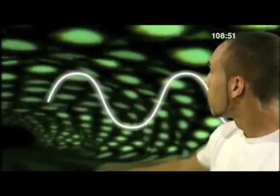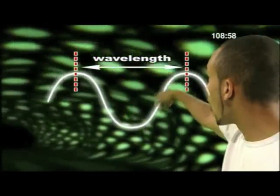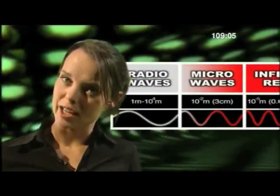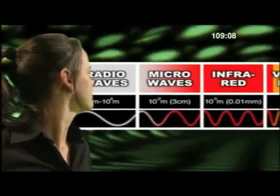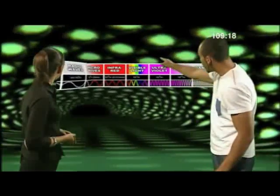But why are the waves arranged in that order? The waves are arranged according to the size of their wavelength and frequency. If we take a wave, the distance from one peak to the next peak is the wavelength, and the number of complete waves you get in one second is the frequency. Radio waves have the longest wavelength and gamma rays have the shortest. Because the changes in wavelength are so gradual, this is called the electromagnetic spectrum.